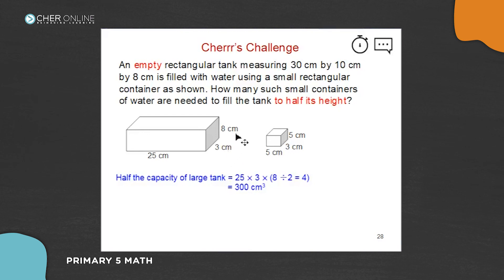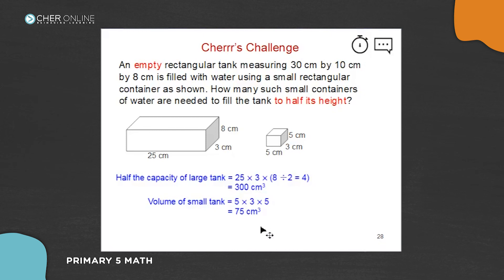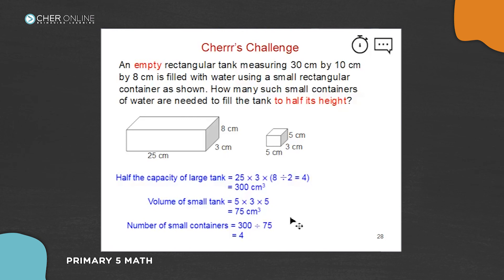The height is only 4 because if it is half filled, half of 8 is 4. Alternatively, you could multiply by 8 first and then divide by 2. Next, find the volume of the small container — 5 times 3 times 5 — which equals 75 cubic centimeters. The large tank's half capacity is 300 cubic centimeters. So take 300 divided by 75, which gives 4. You need 4 small containers to fill the tank to half its height.